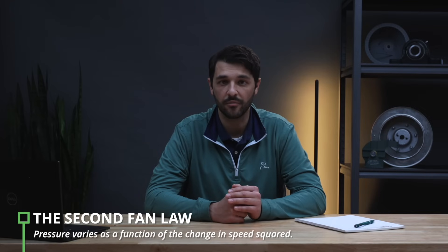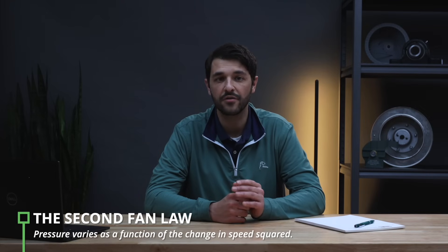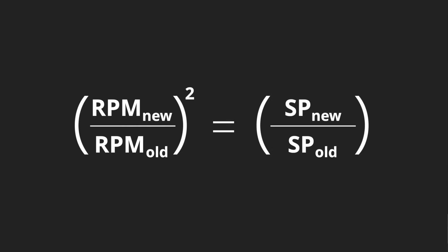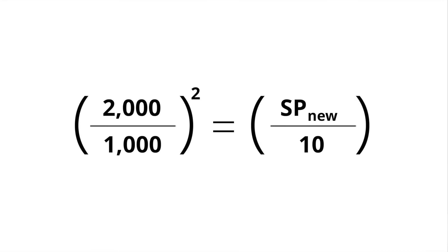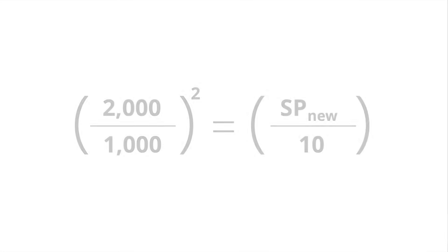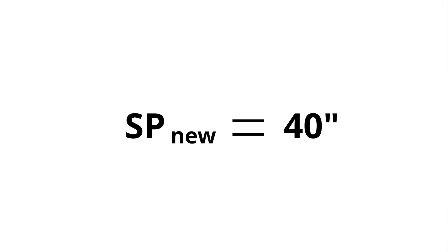The second fan law describes how pressure changes in response to a change in speed. The equation is similar to the first fan law, but here, pressure changes as a function of the change in speed squared, meaning pressure is much more sensitive to a change in speed than flow. Mathematically, the quantity of the change in speed squared equals the change in pressure. Using the same operating point and doubling the speed from 1,000 to 2,000 RPM: the quantity of (2,000 / 1,000) squared equals the new pressure X divided by the old pressure 10 — which solves for a new static pressure of 40 inches of water gauge.